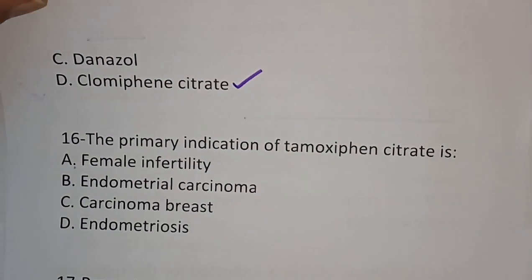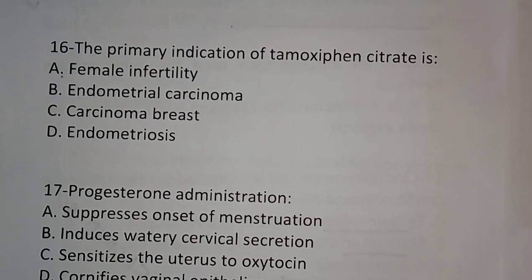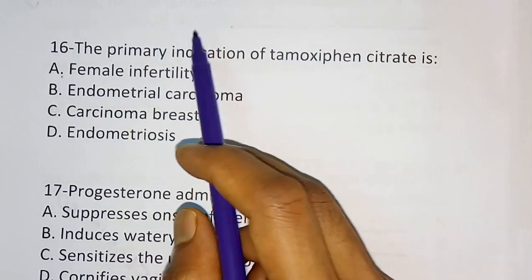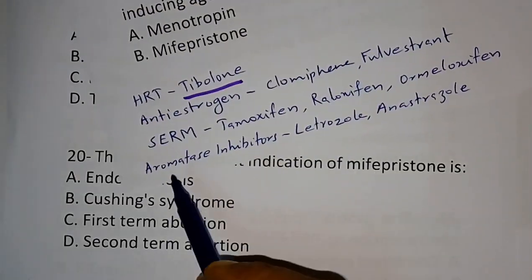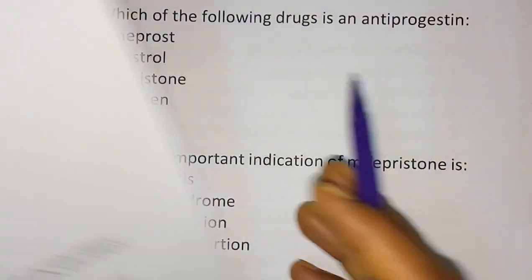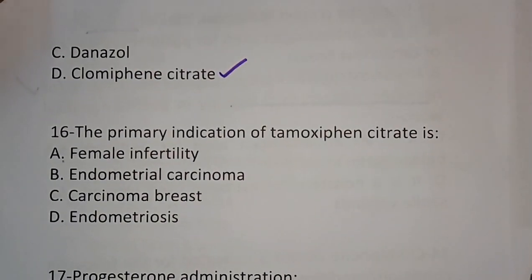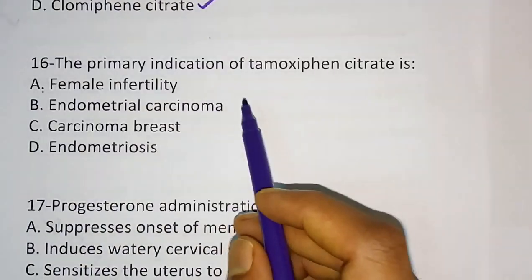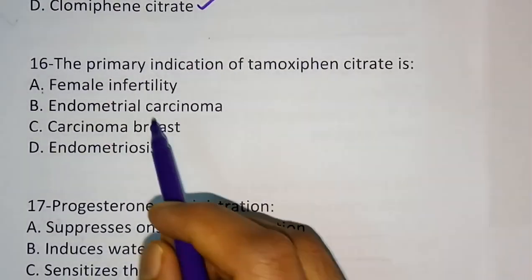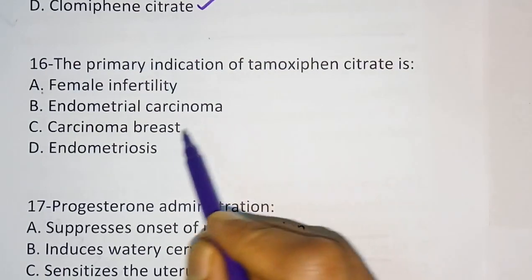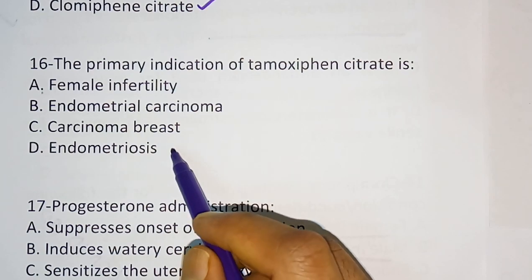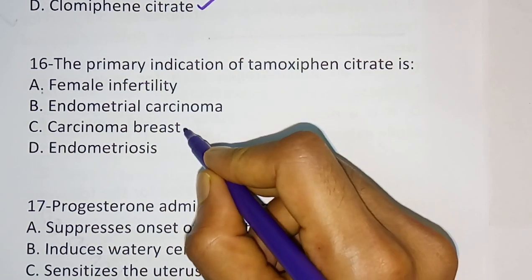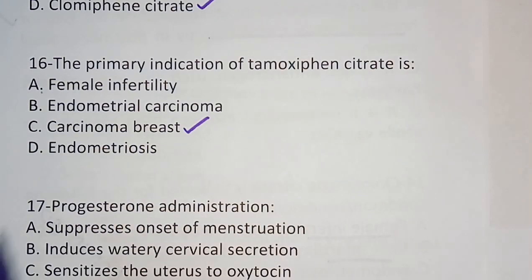Question number 16: The primary indication of tamoxifen citrate. We have already seen that tamoxifen comes under selective estrogen receptor modulators. Options: female infertility, endometrial carcinoma, carcinoma of breast, endometriosis. The correct answer is option C — carcinoma of breast.